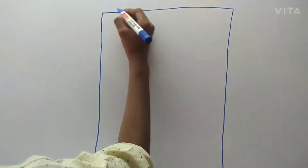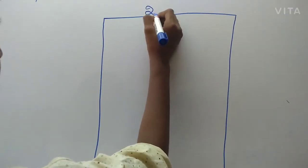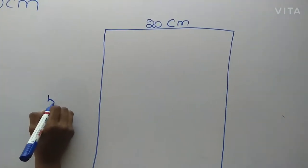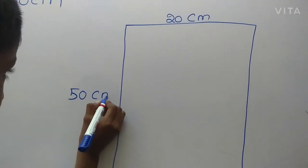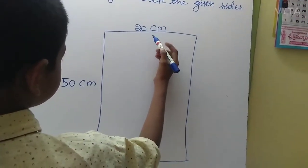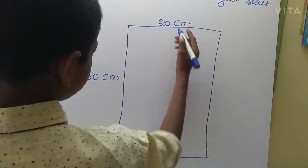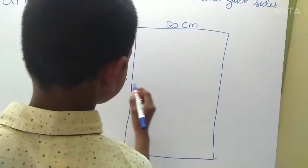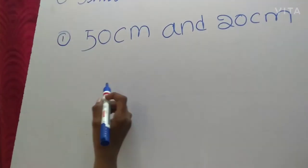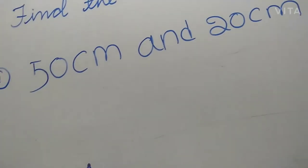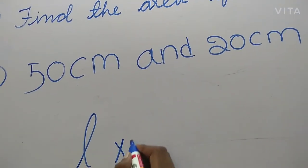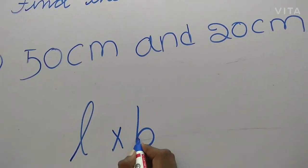Area of rectangle — this is 20 centimeters and 50 centimeters. In the rectangle, opposite sides are equal. We have to apply 20 here and 50 centimeters here. Area of rectangle formula: L into B, length into breadth.